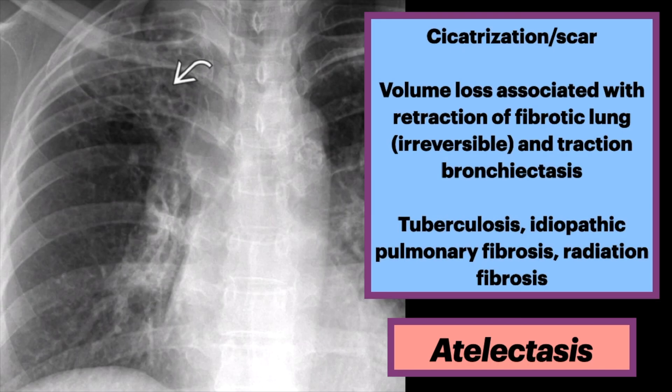The last type we'll talk about is cicatrization or scar atelectasis. It is volume loss associated with retraction of fibrotic lung, which is irreversible, and traction bronchiectasis. Common causes include tuberculosis, idiopathic pulmonary fibrosis, and radiation fibrosis.